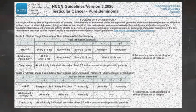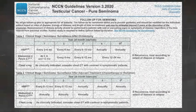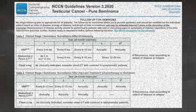Follow-up for pure seminoma stages 1A and 1B after primary treatment: Although no single follow-up plan is applicable to all patients, the NCCN panel has provided guidance for follow-up of patients with testicular GCTs for the first 5 years after the completion of therapy. These recommendations may be individualized and extended beyond 5 years at the discretion of the physician. Follow-up strategies for patients with stage 1 seminoma vary according to the treatment modality received. Measurement of serum tumor markers is optional due to the rarity of marker-only relapse.